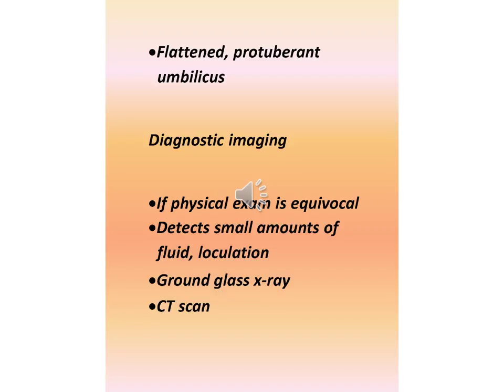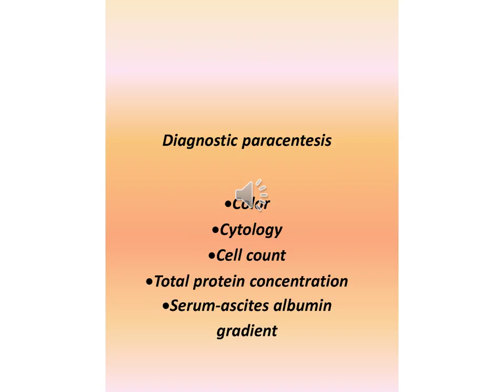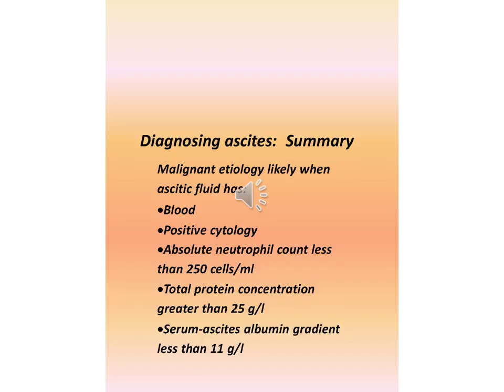Diagnostic imaging: if physical exam is equivocal, imaging can detect small amounts of fluid and loculation. Ground glass appearance on X-ray; CT scan is also used. Diagnostic paracentesis includes assessment of color, cytology, cell count, total protein concentration, and serum-ascites albumin gradient.